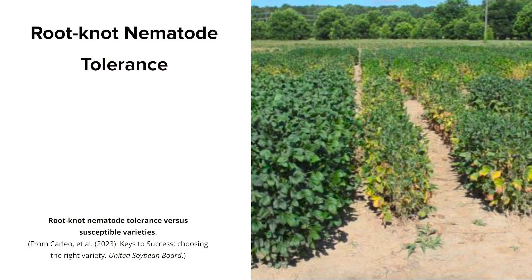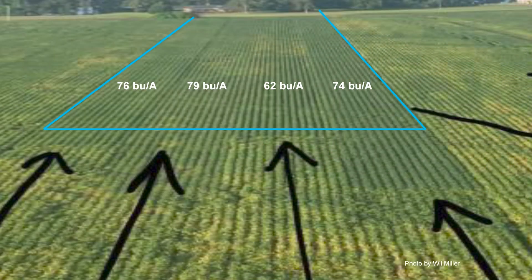Here is an on-farm strip trial. In the blue area you can see four different varieties — the two on the left and the one on the right yielded 70-plus bushels per acre, while the one second from the right dropped more than 10 bushels per acre. This is an example of the yield difference between growing a more tolerant versus a more susceptible variety. Data is available to help you find more tolerant varieties.